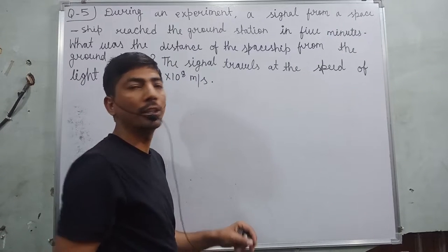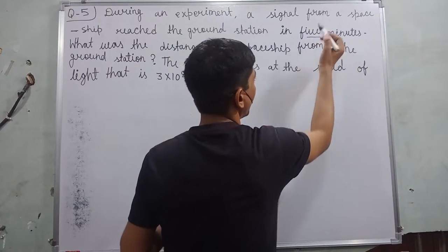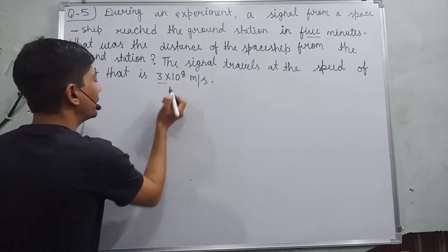So in this question, there are two things which are given. First one is time and second one is speed.